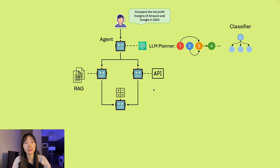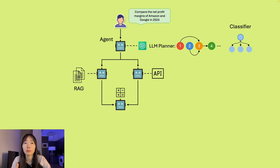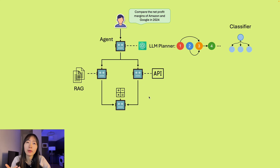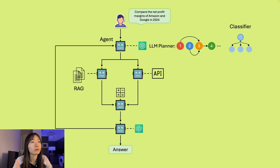The agent configuration doesn't have to be a RAG system. It could be a web search tool, or an agent sending emails — you can customize it however you want depending on your use case. One important thing is that you always want the whole system to be as robust as possible, because sometimes it works well for one type of question but not another. If the planner didn't get it right at the beginning, the whole workflow won't make any sense. So before you hand any result to the user, you want to pass it to a critic agent to check if the result makes sense — and if not, it will send it back to the planner to replan again.